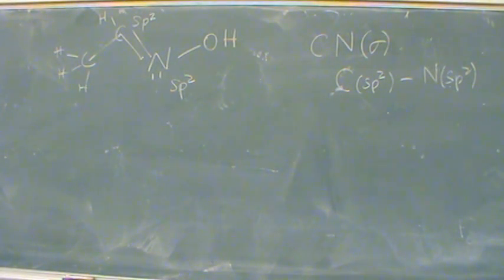So the hybridized orbital, whatever they are, those are the ones that, as far as we've seen, form the sigma bonds.